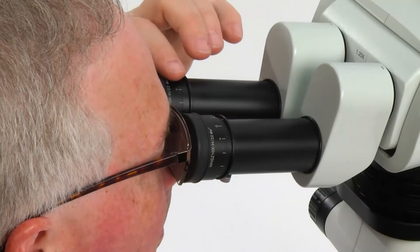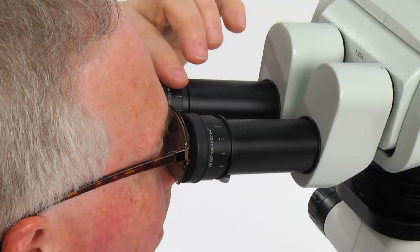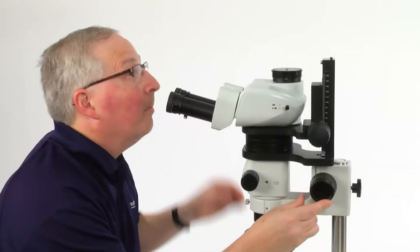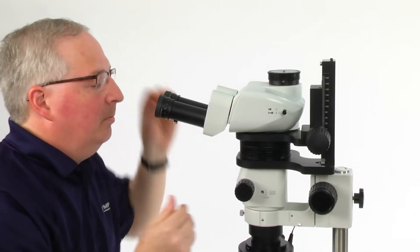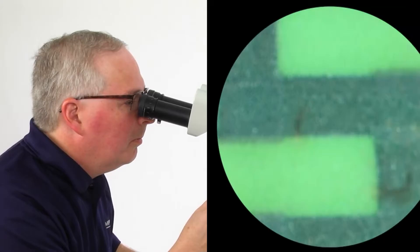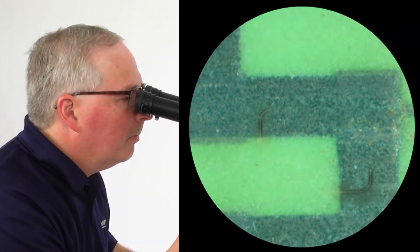The diopter adjustment is used to compensate for differences between one's eyes and is an important step in preventing eye strain that can lead to fatigue as well as eliminating the tedious task of having to refocus the microscope every time the zoom is changed.